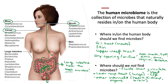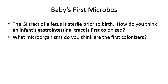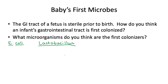Next in your course pack, I ask how a newborn baby initially acquires his or her microbiome. The gastrointestinal tract of a fetus is sterile prior to birth. The first microorganisms that colonize are E. coli, a common gastrointestinal organism, and Lactobacillus, a lactic acid bacterium that makes lactic acid on our skin and in areas like the vagina. One of the most important events for this initial colonization is childbirth.